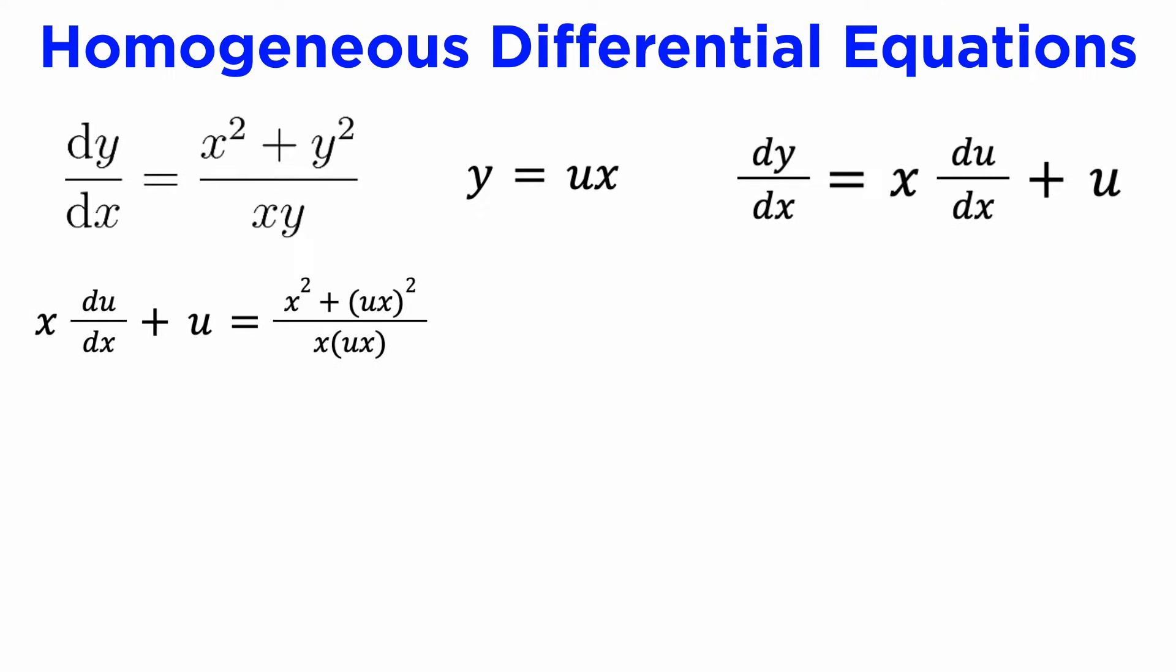Now that we have found both y and dy/dx in terms of u, we need to put these into our original DE. On the left side of our DE, we replace dy/dx with x du/dx plus u. On the right side of our DE, we replace all the y terms with ux. Let's expand, cancel the x squared terms, cancel the u terms, and isolate du/dx.